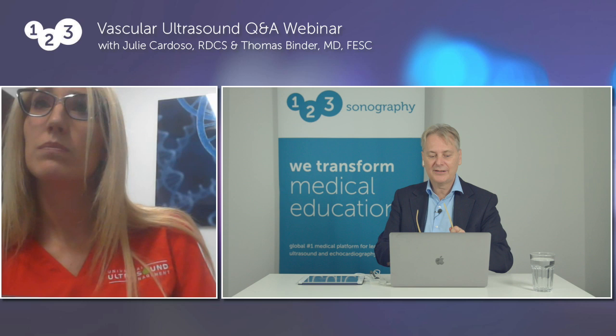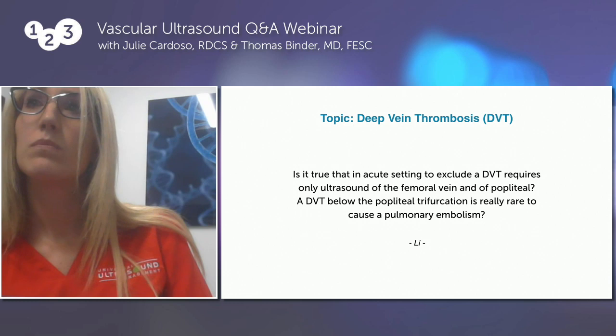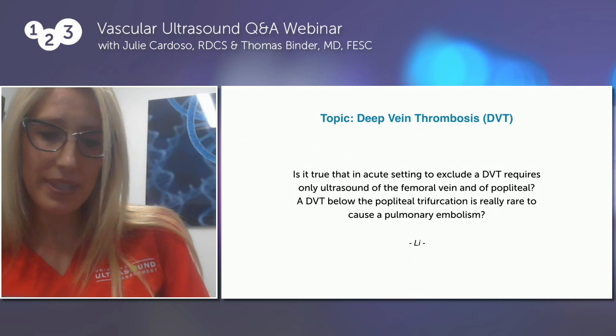A question about DVT: is it true that in the acute setting, excluding DVT requires only ultrasound of the femoral vein and popliteal, since DVT below the popliteal trifurcation is relatively rare to cause pulmonary embolism? In an acute setting of DVT, we encourage everyone to look at all the deep veins. A pulmonary embolism from below-knee DVT can happen — it's more likely from a vein closer to the heart above the knee, but it can still happen regardless of where the thrombus occurs.